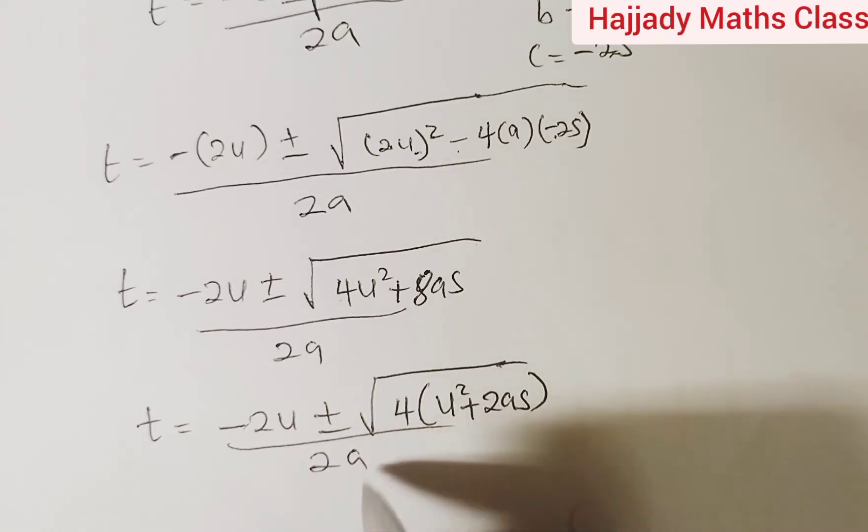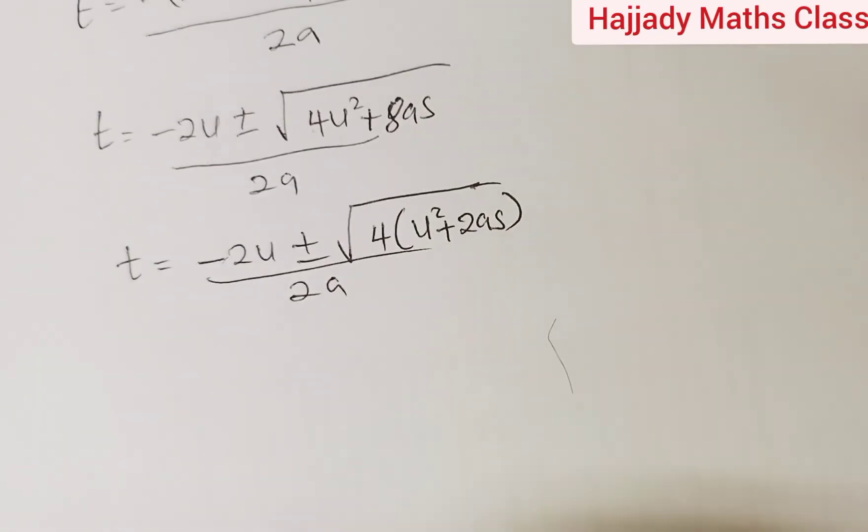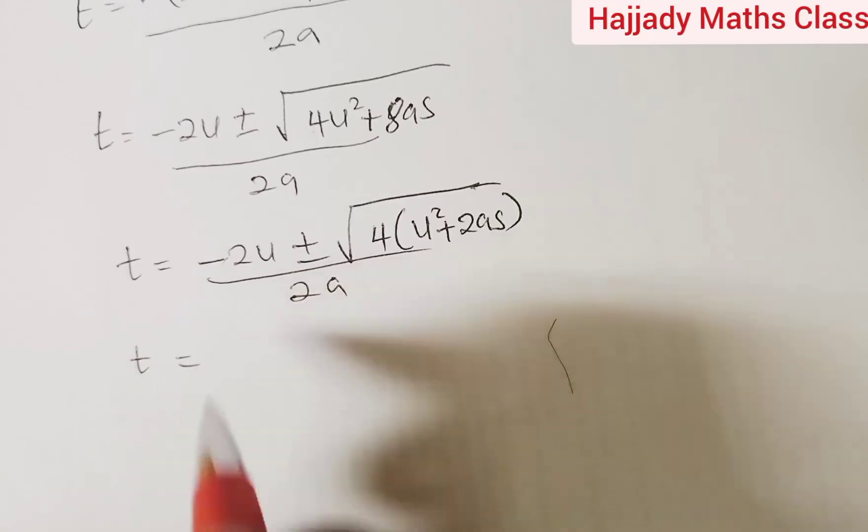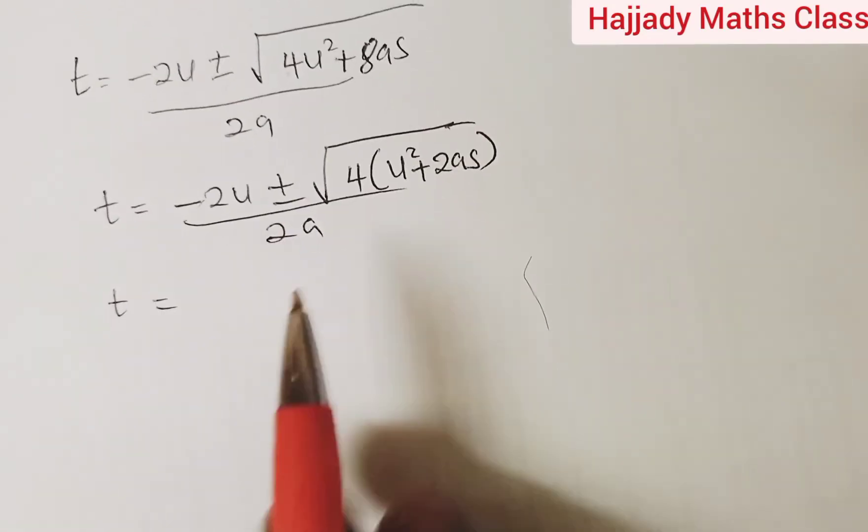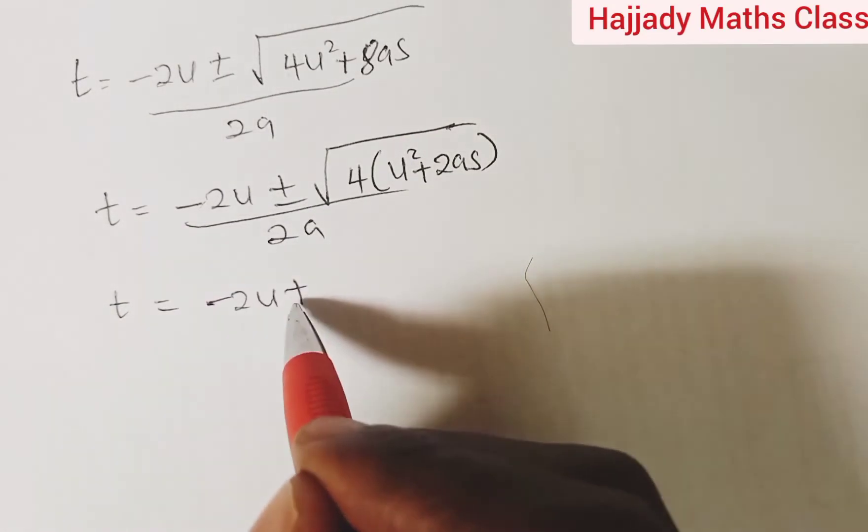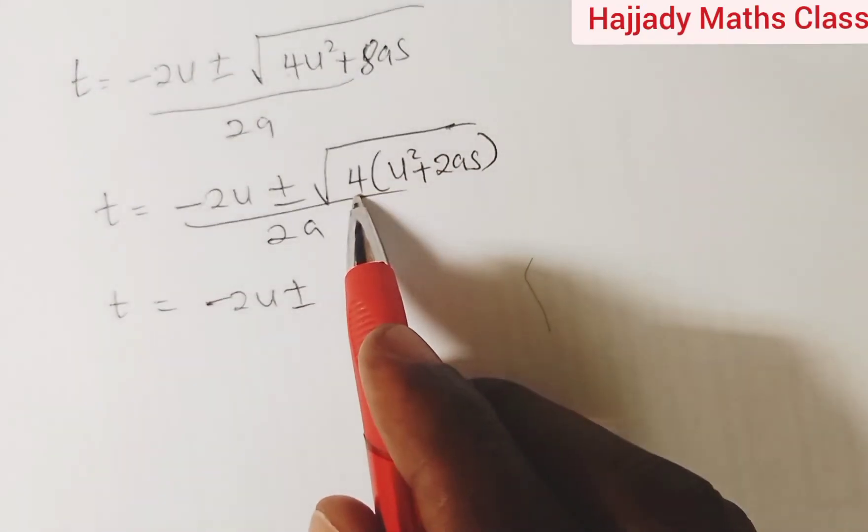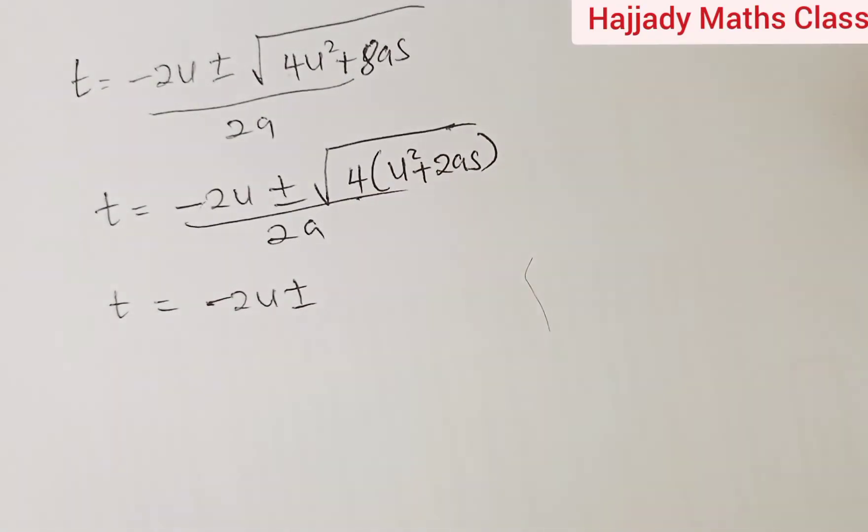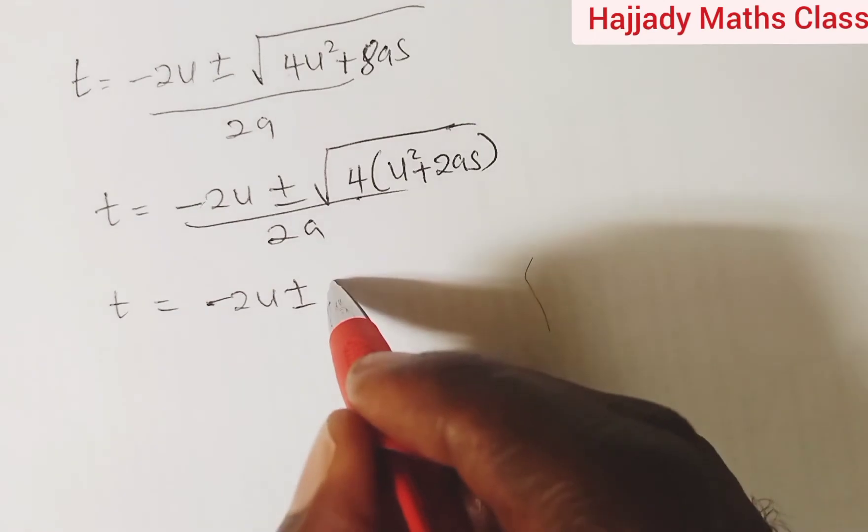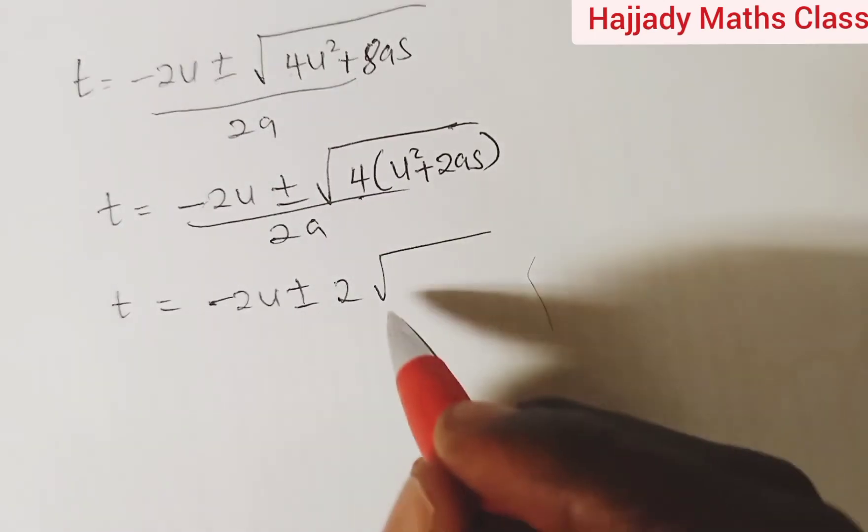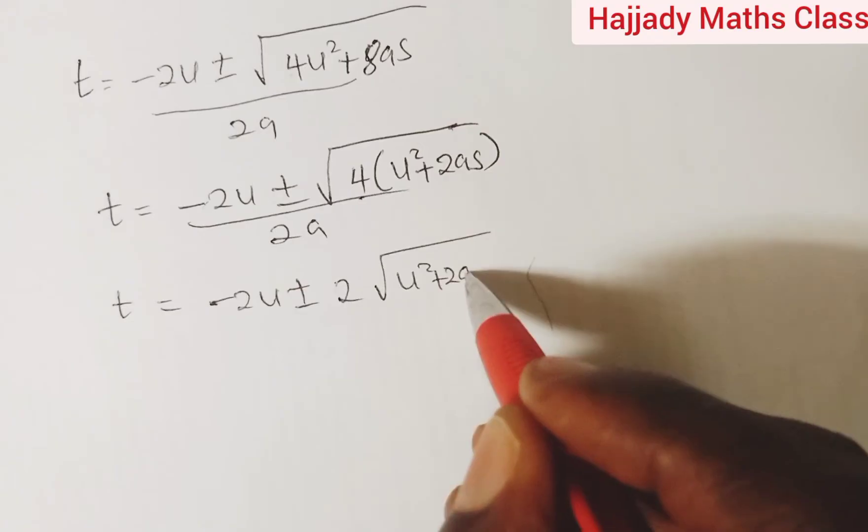And here we have our t to be equal minus 2u plus or minus, we can possibly find the square root of 4. And that is what? We have 2 times the square root of u squared plus 2as.